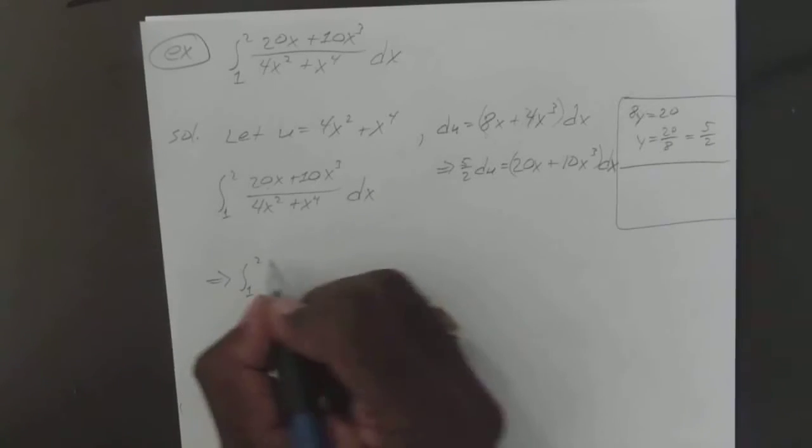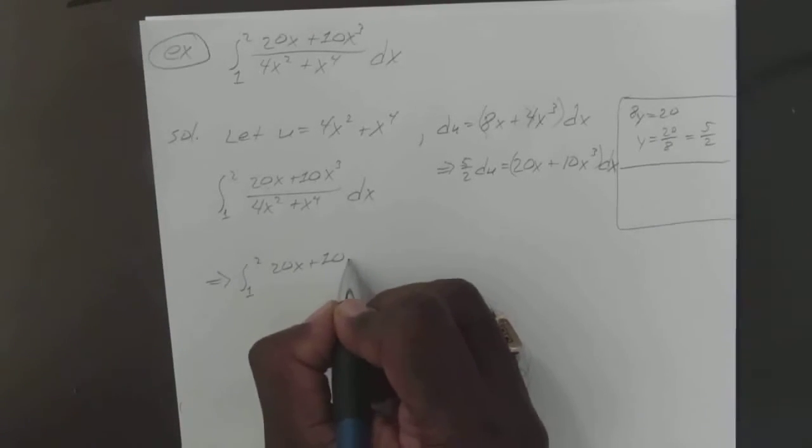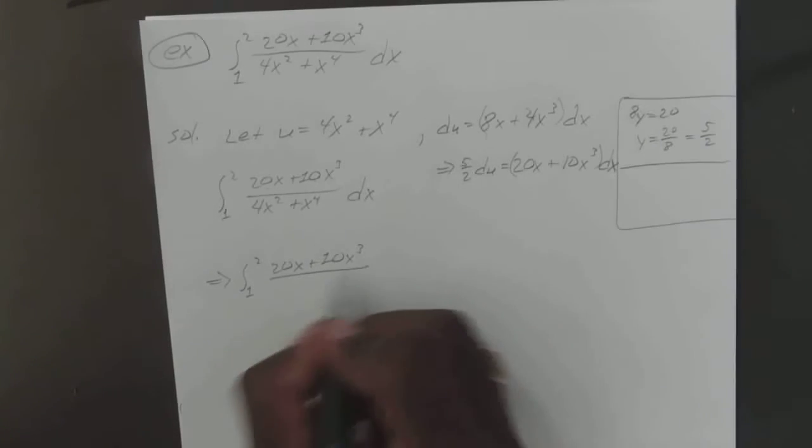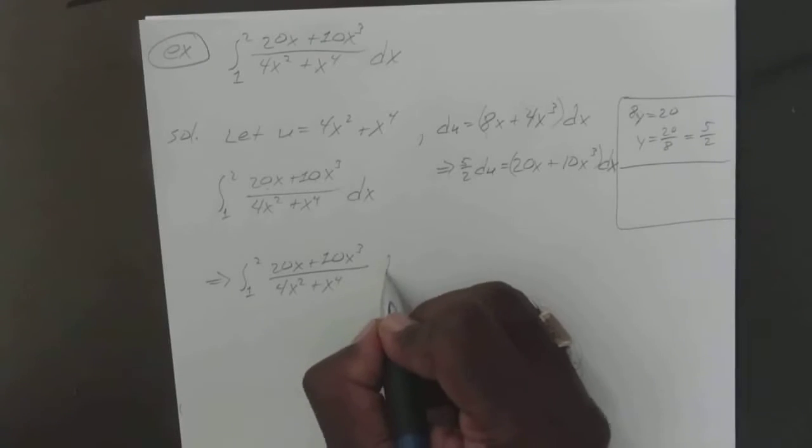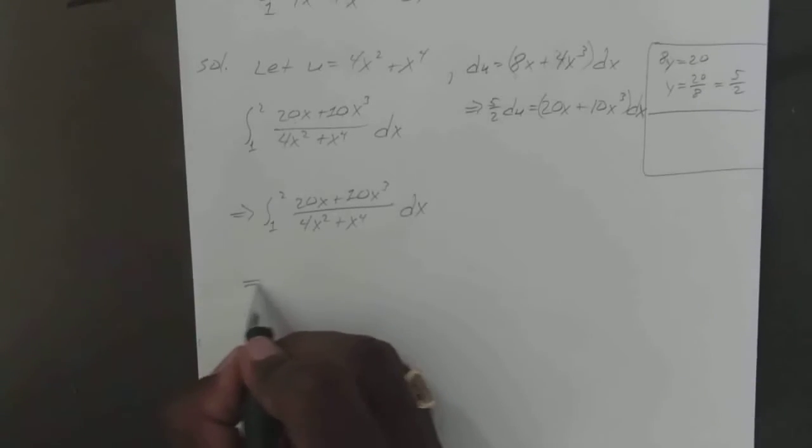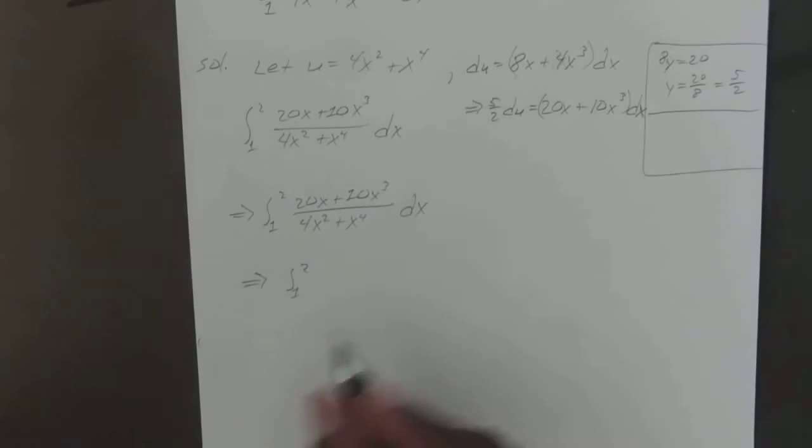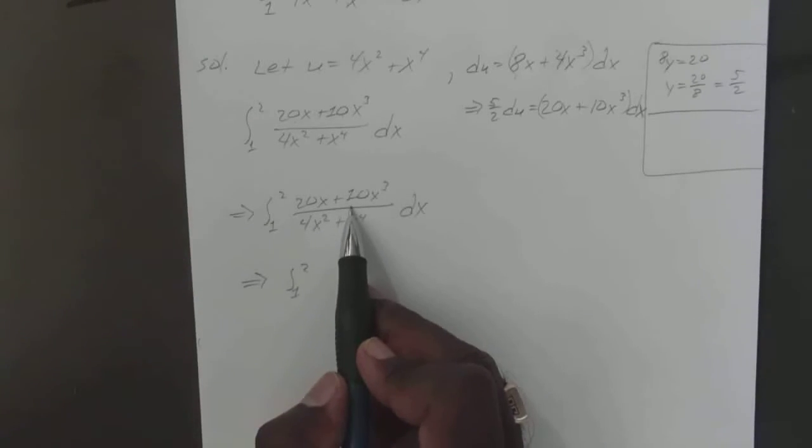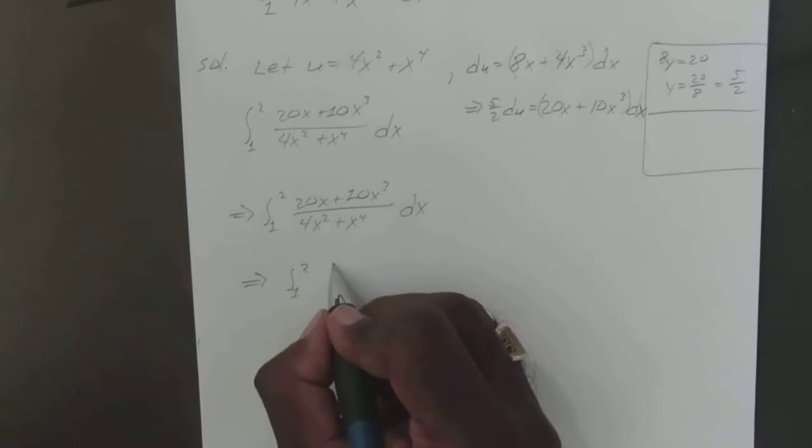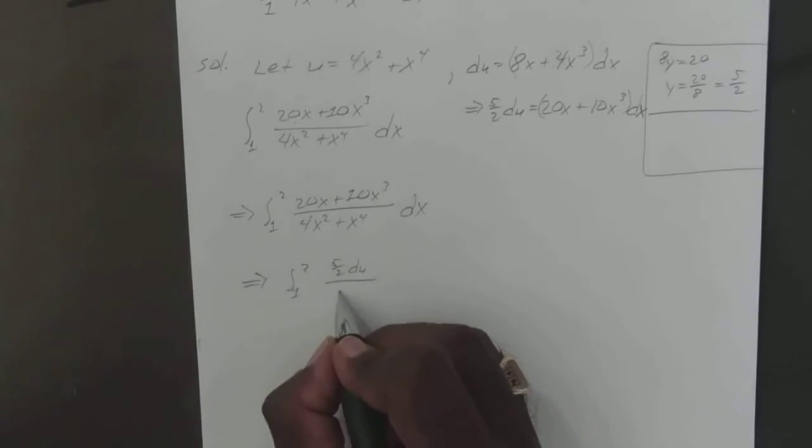That means our integral from 1 to 2 of 20x plus 10x to the 3rd over 4x squared plus x to the 4th with respect to x actually becomes our integral from 1 to 2, our 20x plus 10x to the 3rd becomes 5 over 2 du over our original u.